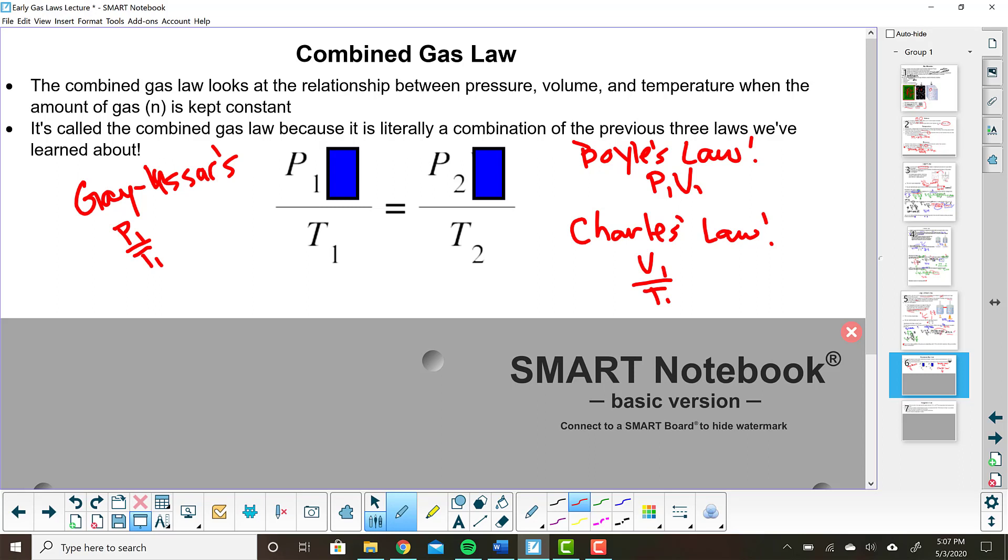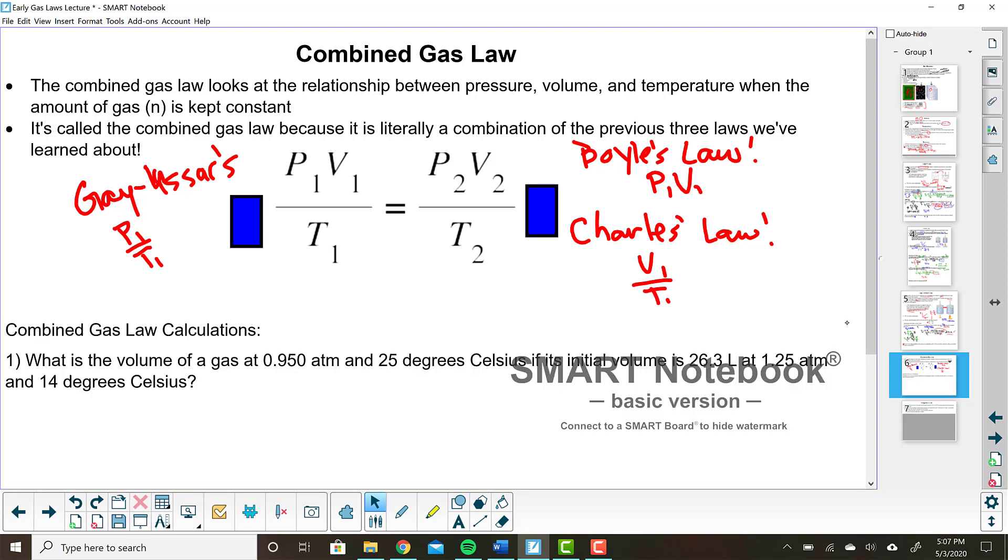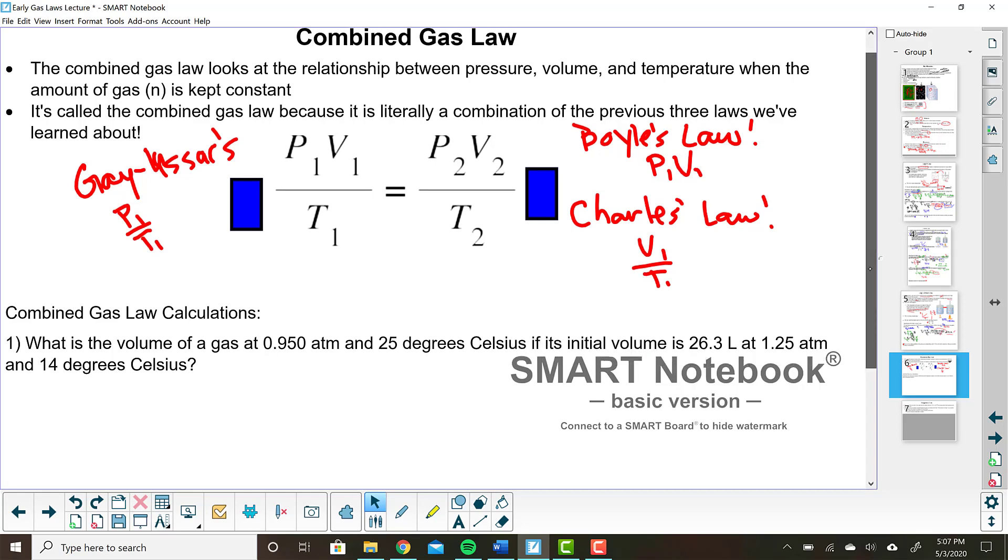So if you can memorize just one equation, not that you really have to memorize it because this isn't the classroom setting. But if you only want to remember one equation, this would be the equation to remember. Because all of the other equations can be decided based off of this one. You just cover up whatever is held constant and you've got the law that you're looking for. But let's do an example of what the math looks like for one of these big combined gas law problems.